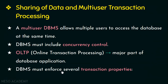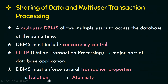DBMS must ensure several transaction properties — here, transaction means a program under execution. The two transaction properties are isolation and atomicity. Isolation means that if one agent assigns a seat to a particular passenger, that seat is blocked or isolated from other agents. Atomicity means DBMS should ensure that a transaction is executed completely or not at all. When an agent is assigned a seat for a passenger and if the transaction is stuck midway or incomplete, then that seat has to be released for other agents to access. So either the transaction should be executed completely or not at all.